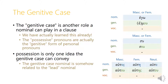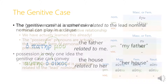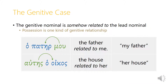But possession is only one idea that the genitive case can convey. What the genitive case tells us is that the nominal in the genitive case is somehow related to what we call the lead nominal, and possession is just one kind of genitive relationship. So if we take ha-pater mu, mu modifies pater, and tells us that this is the father related to me somehow.